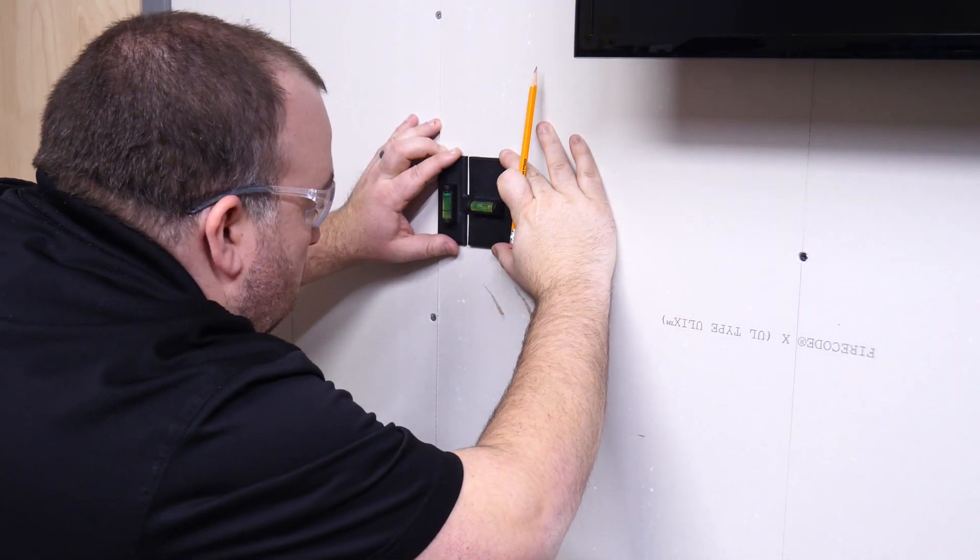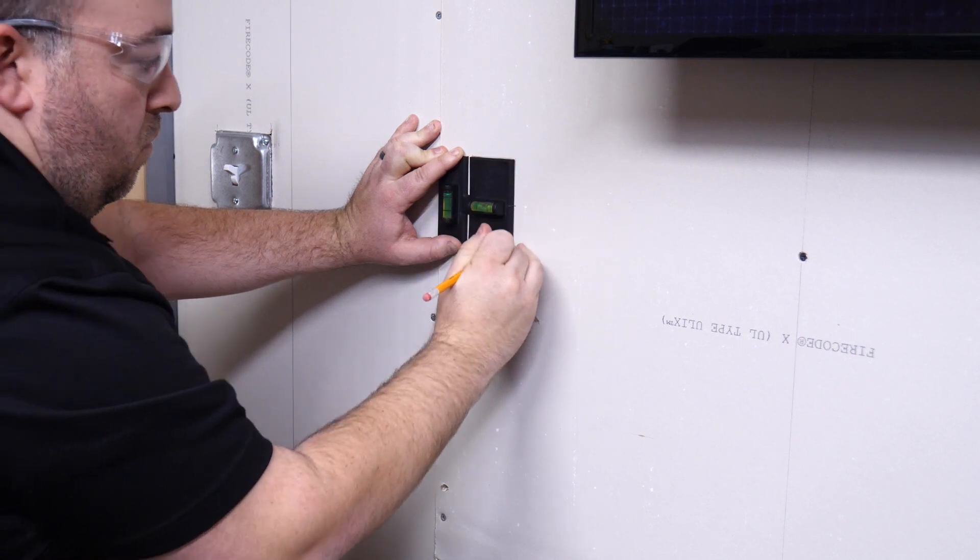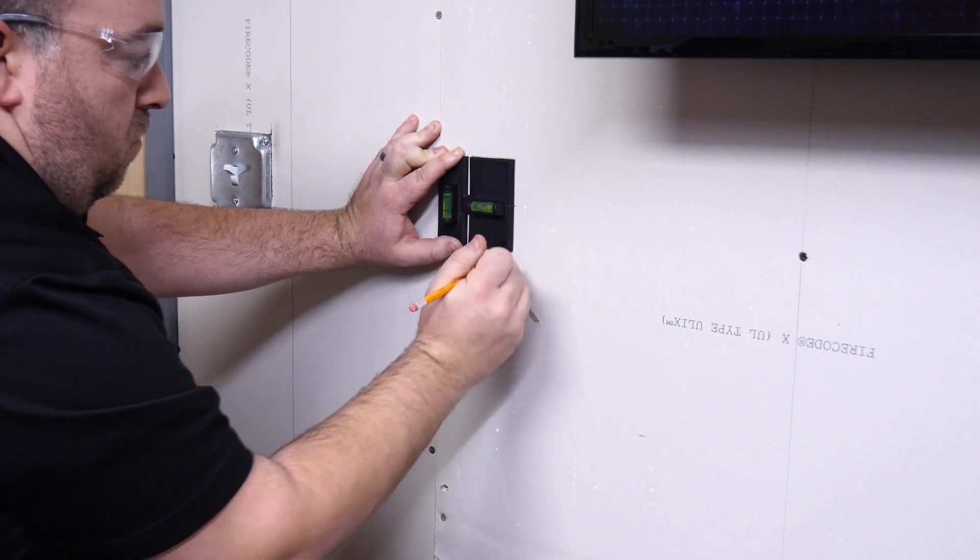Once we verify the height of the box, we need to locate where we're going to put it. Make sure we have a good cable path, no other obstacles are in our way, and that we're not going to hit a stud.